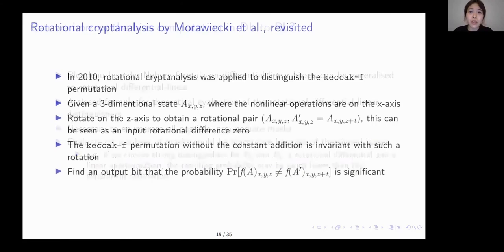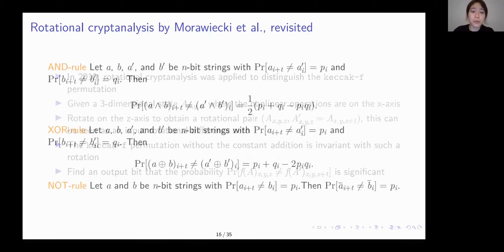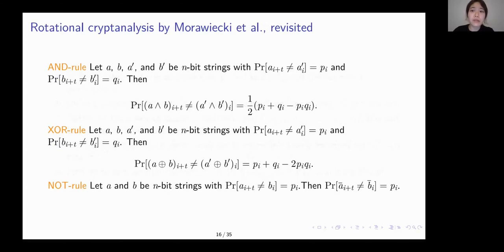So we decide to take yet another approach. And it is based on the previous work by Morawiecki on rotational analysis with application to Keccak F. Given a three-dimensional state A, where the nonlinear operation is on the x-axis, we rotate the state on the z-axis to get a rotational pair. So in other words, the input rotational difference is zero. The Keccak F permutation without constant is invariant under such a rotation. And the aim is to find out which position has a high probability that the output pair differs on that bit.